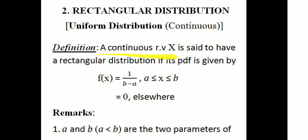A continuous random variable X is said to have a rectangular distribution or uniform distribution if its probability density function is given by f(x) = 1/(b − a), where a ≤ x ≤ b, and 0 elsewhere. So a continuous random variable X has a rectangular distribution with f(x) = 1/(b − a), where x varies between a and b.